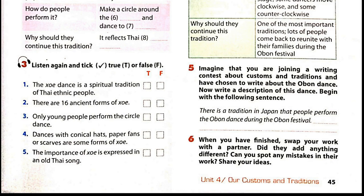The most popular form is the Xoe Vum, or circle dance, because it expresses social unity. People, young or old alike, join hands to make a circle around the fire and dance to the music. Besides the circle dance, there are dances with conical hats, paper fans or scarves. Old people say they shouldn't break with this tradition, because it reflects Thai culture and lifestyle. As a Thai folk song goes, without the Xoe dance, the rice won't grow and people won't get married.